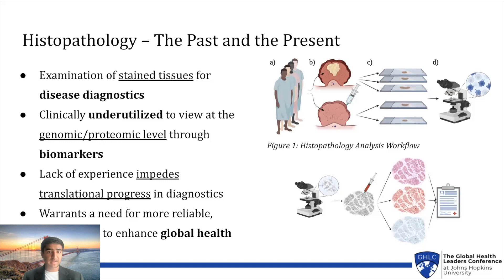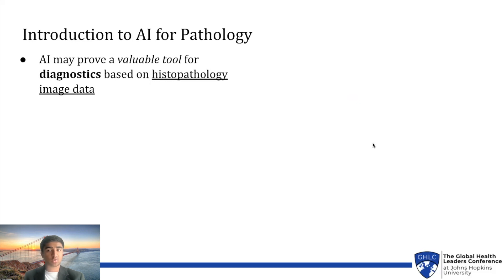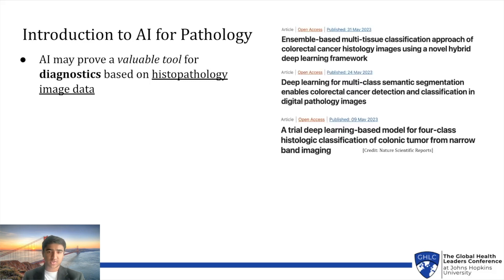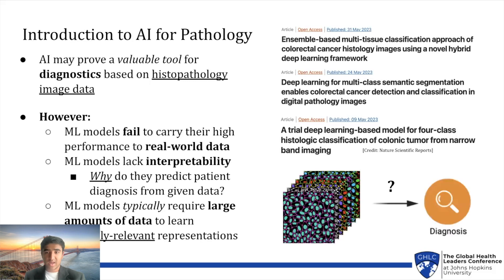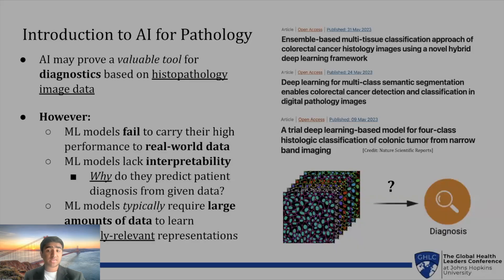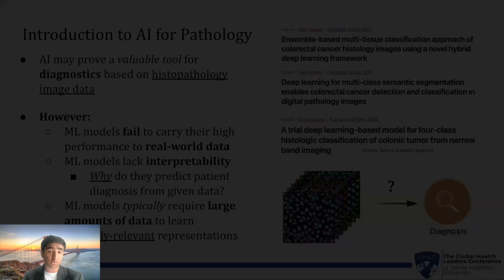Limited expertise in analyzing such data impedes progress in achieving accurate diagnostics, and as a result, the need arises for more reliable and robust tools to ensure global health. On the right, you can observe the histopathology image analysis workflow and how it informs patient treatments. AI as a diagnostic tool with histopathology data holds promise, but it faces challenges. Deep learning models struggle with real-world data, lack interpretability, and need large datasets for practical clinical use. These limitations reduce generalizability, increase bias, and hinder equitable healthcare access in resource-constrained settings.